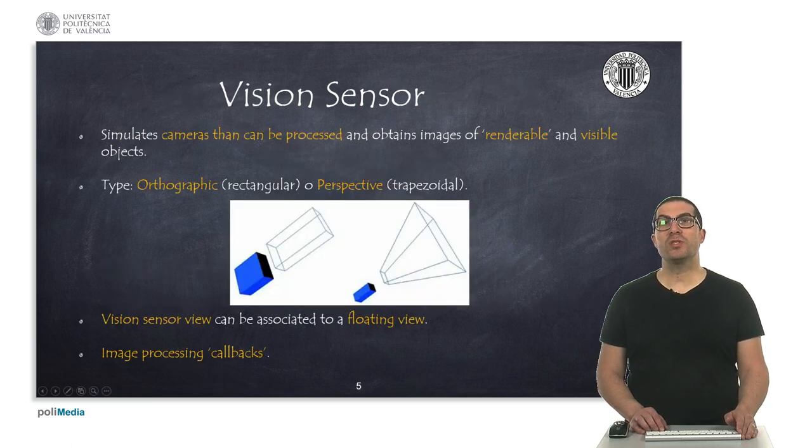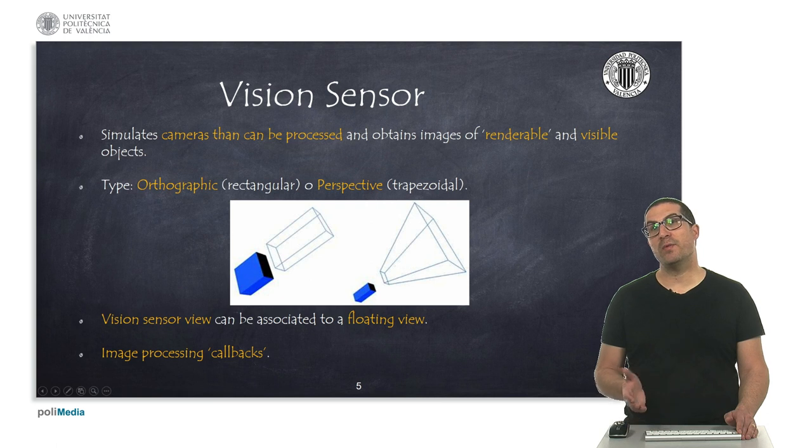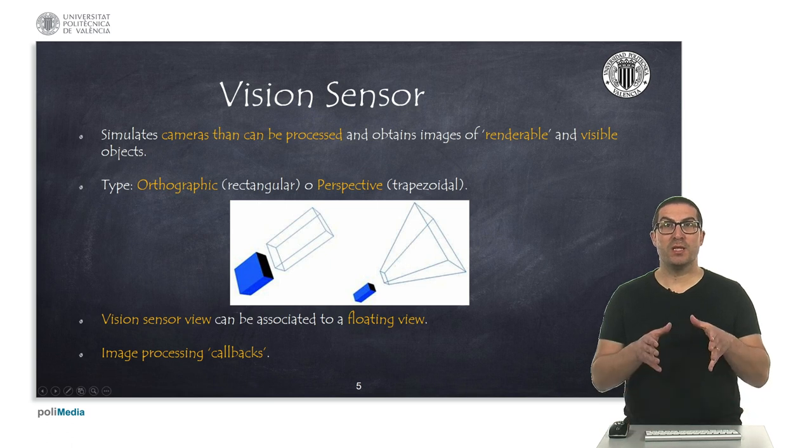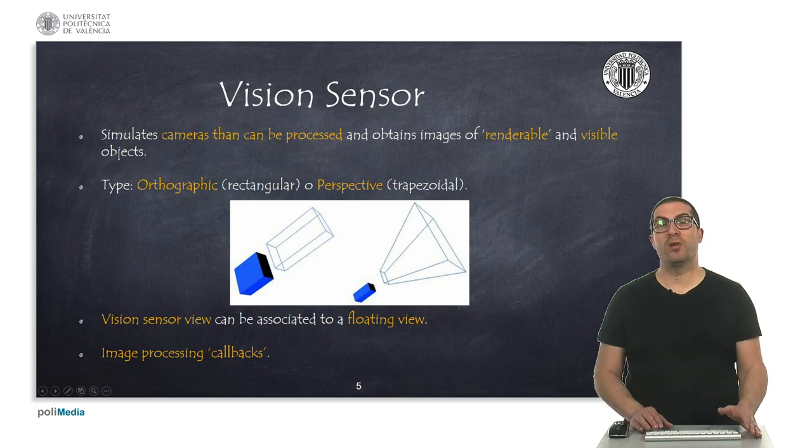Vision sensors allow you to simulate cameras that can be processed. You can obtain images from visible and renderable objects. Vision sensors can be orthographic type, which defines a rectangular volume, or perspective type, which defines a trapezoidal volume, as is shown in the figure.